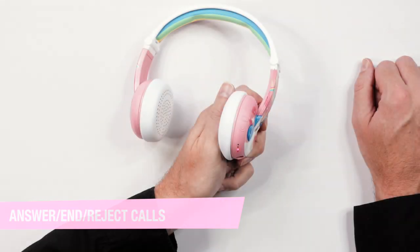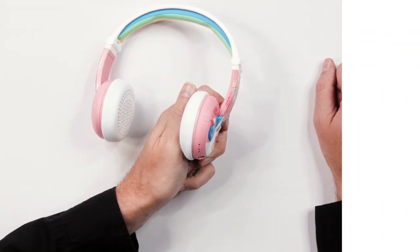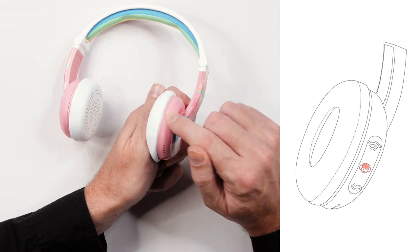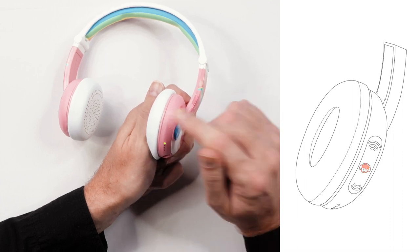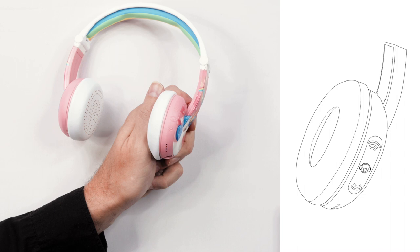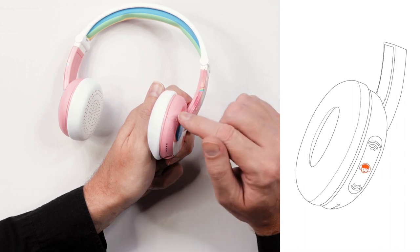Call functions. To answer calls, press the multi-function button once. To end a call, press the multi-function button once. To reject an incoming call, hold the multi-function button down for one second.